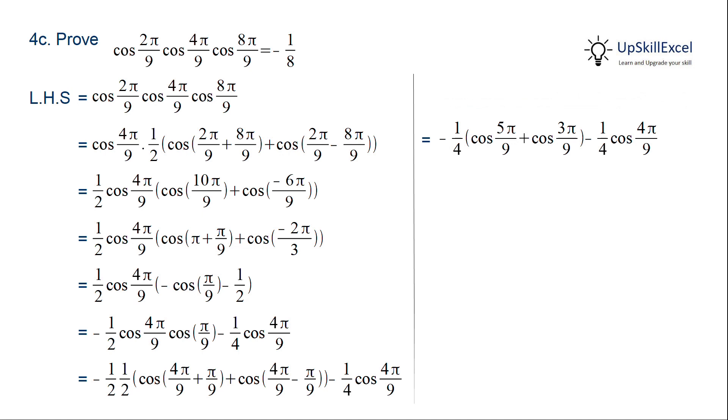Cos 5π/9 can be further simplified like we did earlier using cos(π - 4π/9). And cos 3π/9 can be simplified to cos π/3.